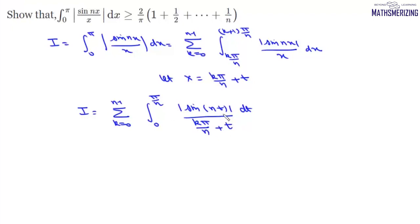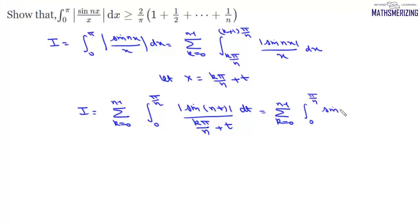In this interval the sin function is positive, so we can write this integral as the summation k varies from 0 to n−1 of the integral from 0 to π/n of sin(nt) / (kπ/n + t) dt.